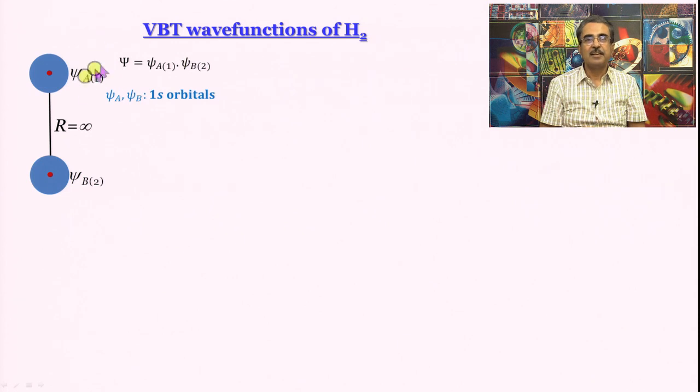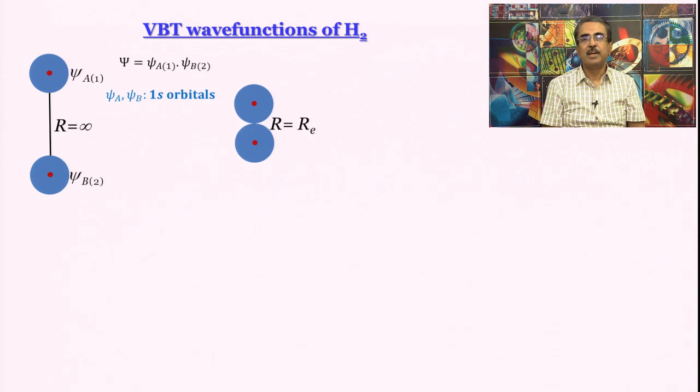Capital psi here is the wave function of the molecule that we are trying to write. At infinite separation wave function would be psi-a(1) multiplied by psi-b(2): electron number 1 in A, electron number 2 in B, not very difficult.